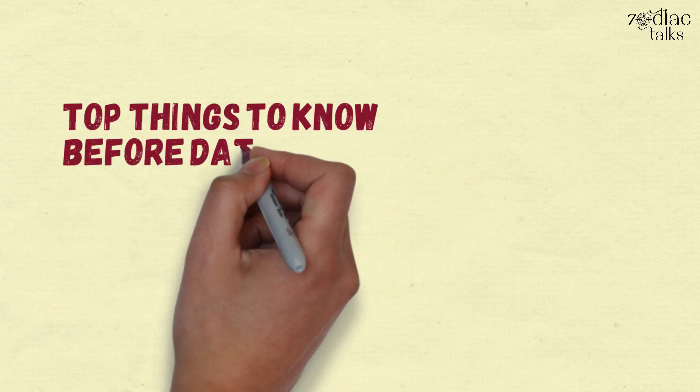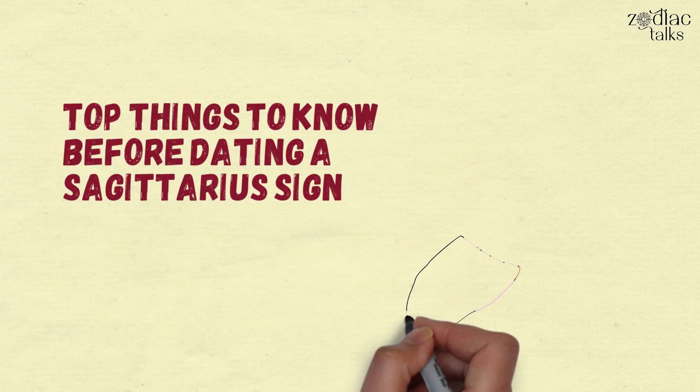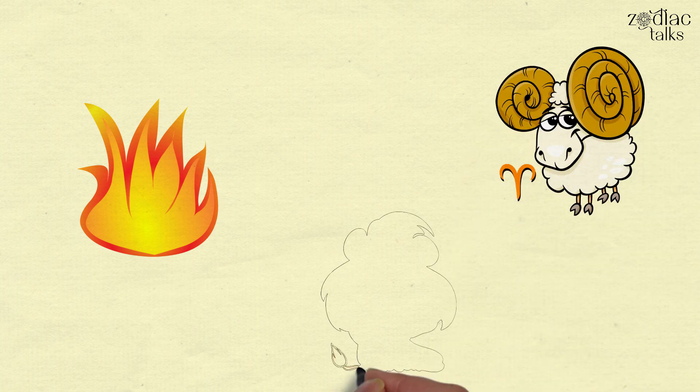Top Things to Know Before Dating a Sagittarius Zodiac Sign. The archer of the zodiac wheel, Sagittarius is a fire sign that gets along extremely well with the other fire signs, Aries and Leo.